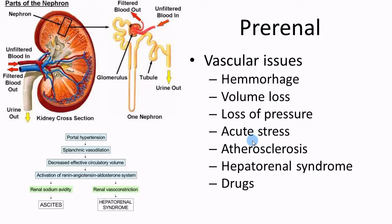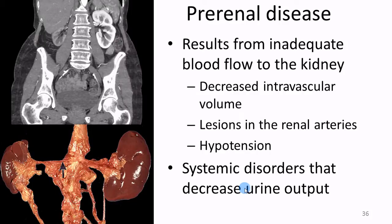Atherosclerosis can decrease blood flow due to buildup inside the arterial walls. Hepatorenal syndrome is another cause — we talked about that last week. Certain drugs, like blood pressure medications, can also affect blood flow to the kidney. Pre-renal diseases include things like shock and decreased blood flow.